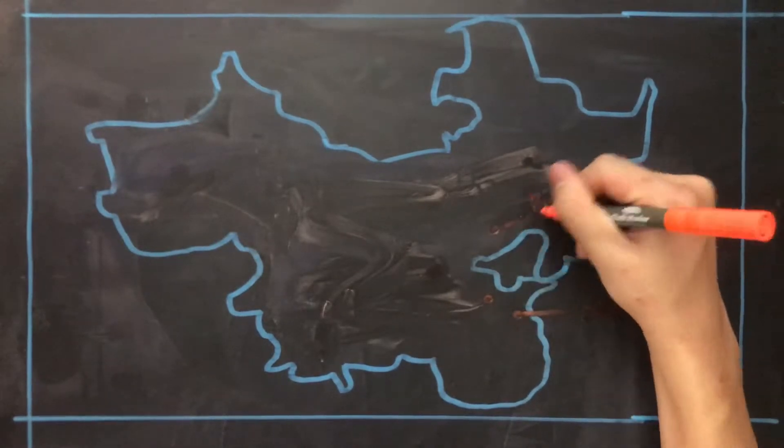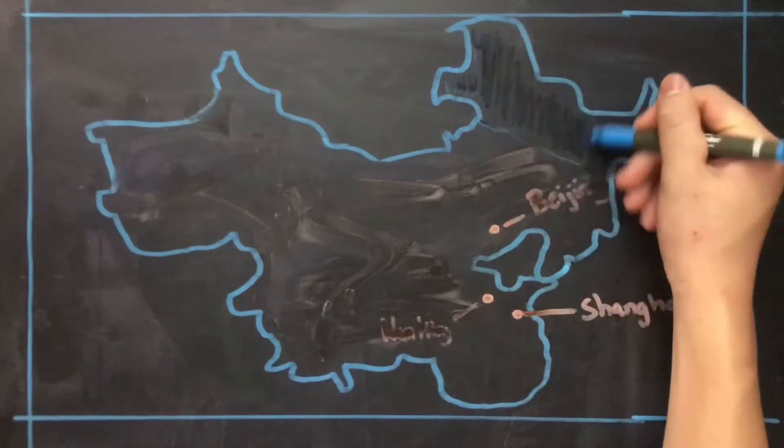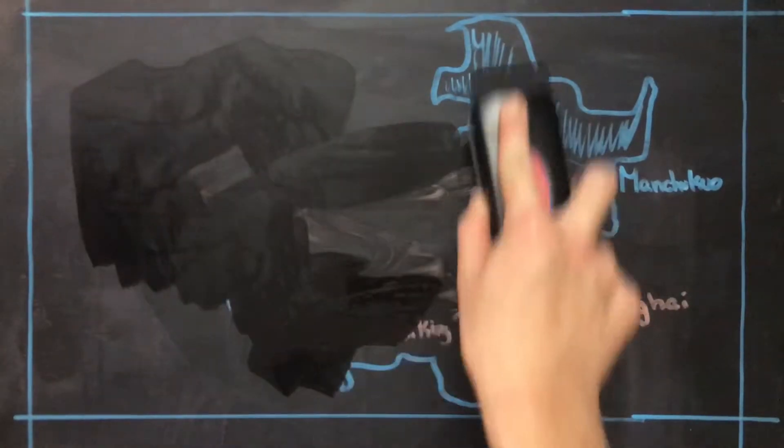During this war, the Japanese army traveled down the eastern coast of China, conquering cities such as Beijing, Shanghai, and Nanking. On August 8th, 1937, the Japanese won their first major battle in this war with the Battle of Beijing.